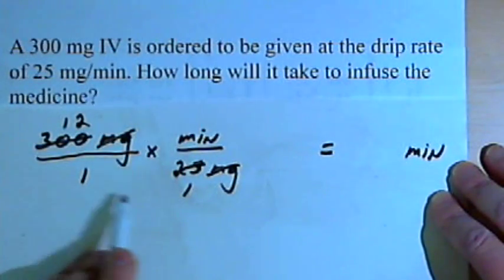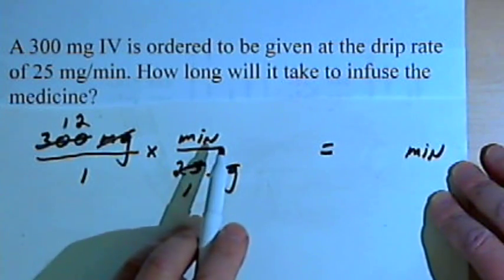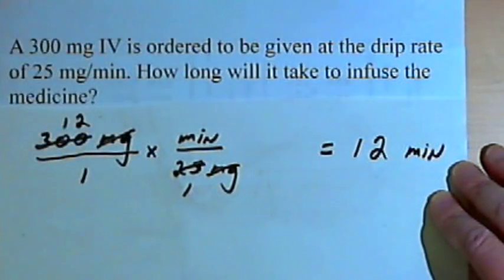Now I've only got 1's in the denominators, so I don't have to worry about them. I just multiply the numerators. That's going to be 12 times minutes. My answer is going to be 12 minutes.